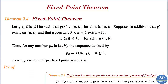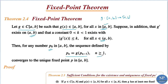The fixed point theorem states that: let g belong to C[a,b] such that g(x) belongs to [a,b] for all x in [a,b] — that is, g is a continuous function from [a,b] to [a,b]. Suppose in addition that g' exists on (a,b) and that a constant k exists in (0,1) with |g'(x)| ≤ k for all x in (a,b). Then for any number p₀ in [a,b], the sequence defined by p_n = g(p_{n-1}) for n ≥ 1 converges to the unique fixed point p in [a,b].